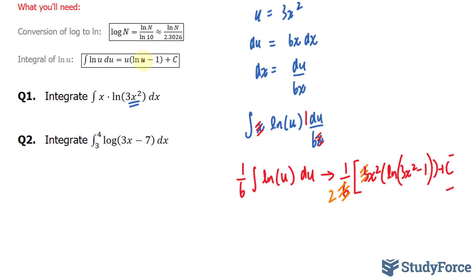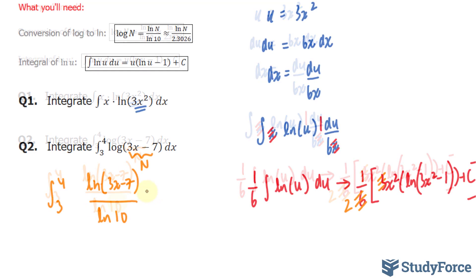where log of n is equal to ln n over ln 10, or if you don't want to use ln 10, you can use approximately 2.30. Let's go ahead and convert this first, and then use the exact same logic in question 1 for question 2.